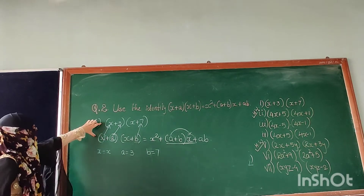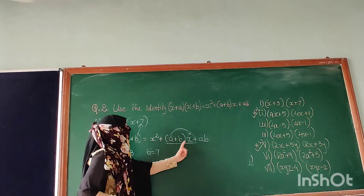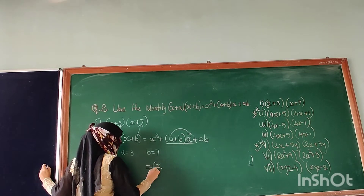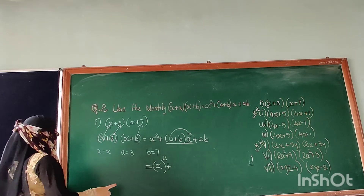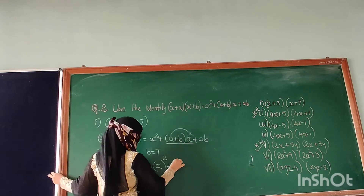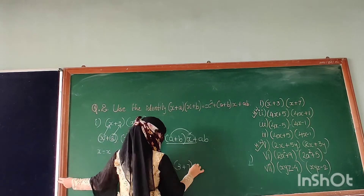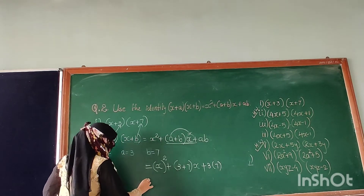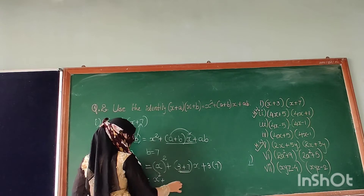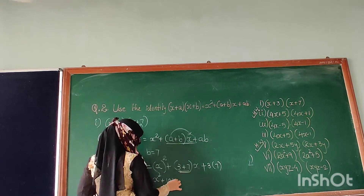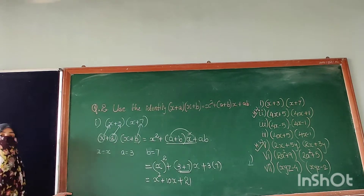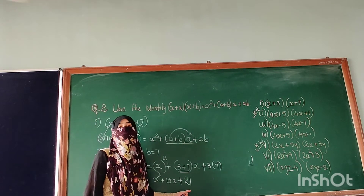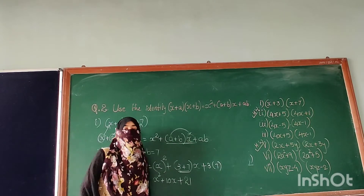Now look — our question is given, so we will put the values in the right-hand side. So x stays as x. Plus a and b: a is 3 and b is 7, so 3 plus 7. Then x stays as is, plus a times b, so 3 times 7. Now solve this: x squared plus 10x plus 21. Further we cannot simplify it because all the terms are not like terms.